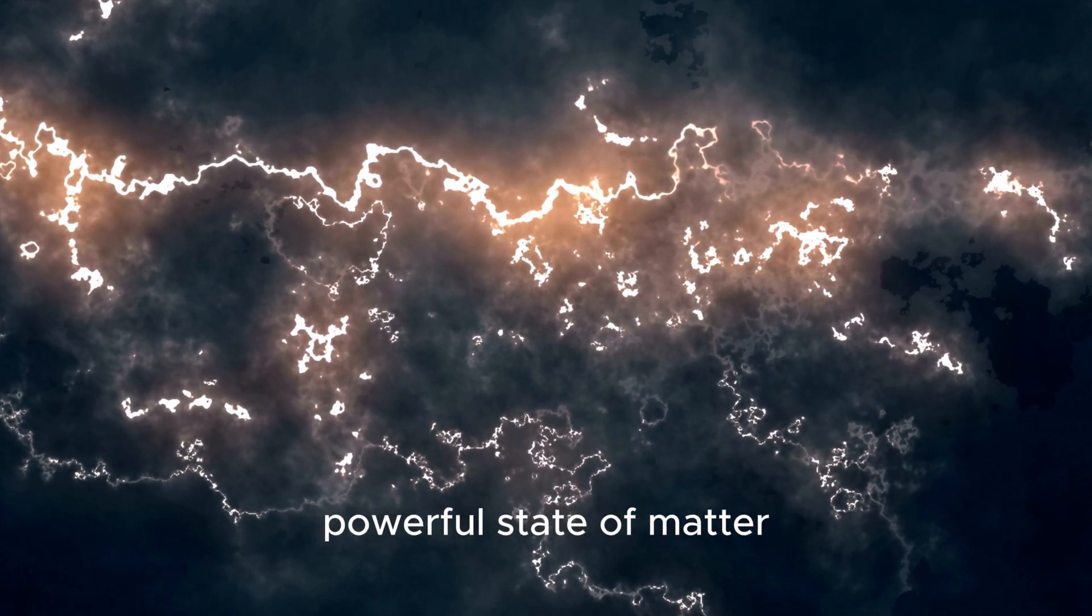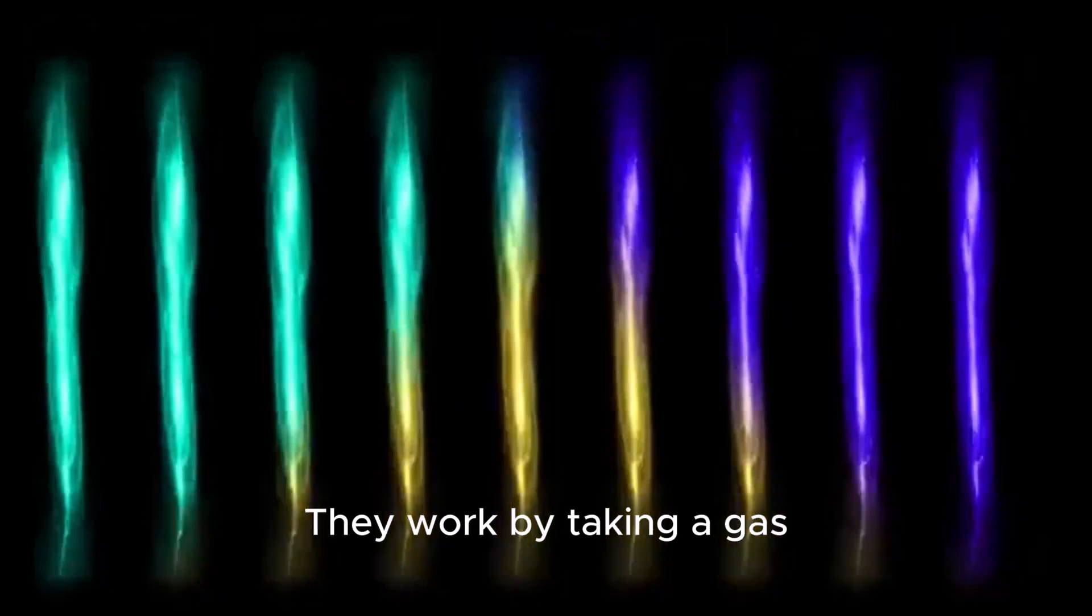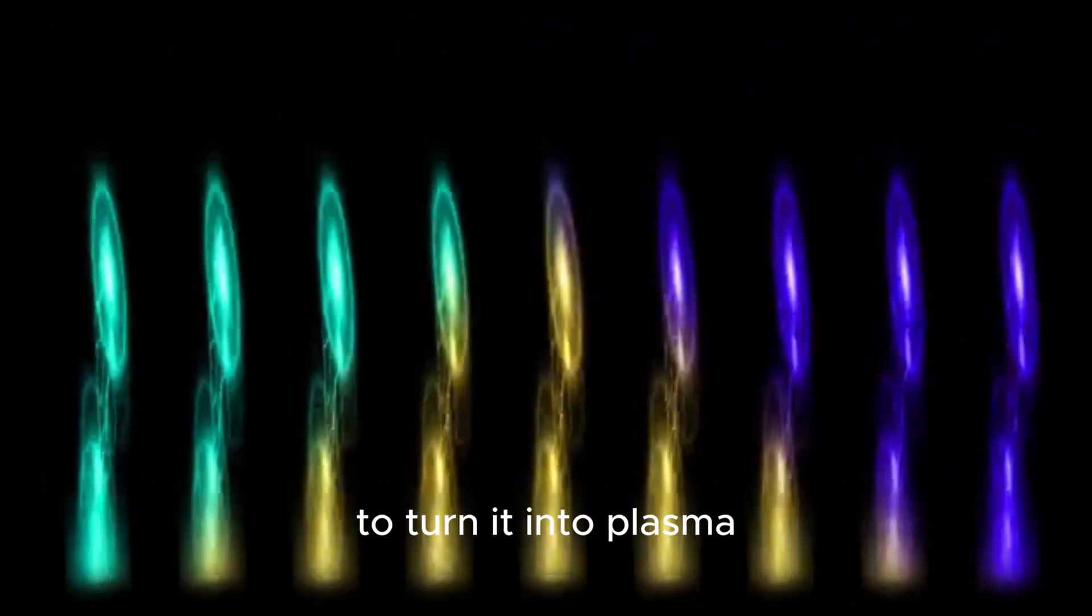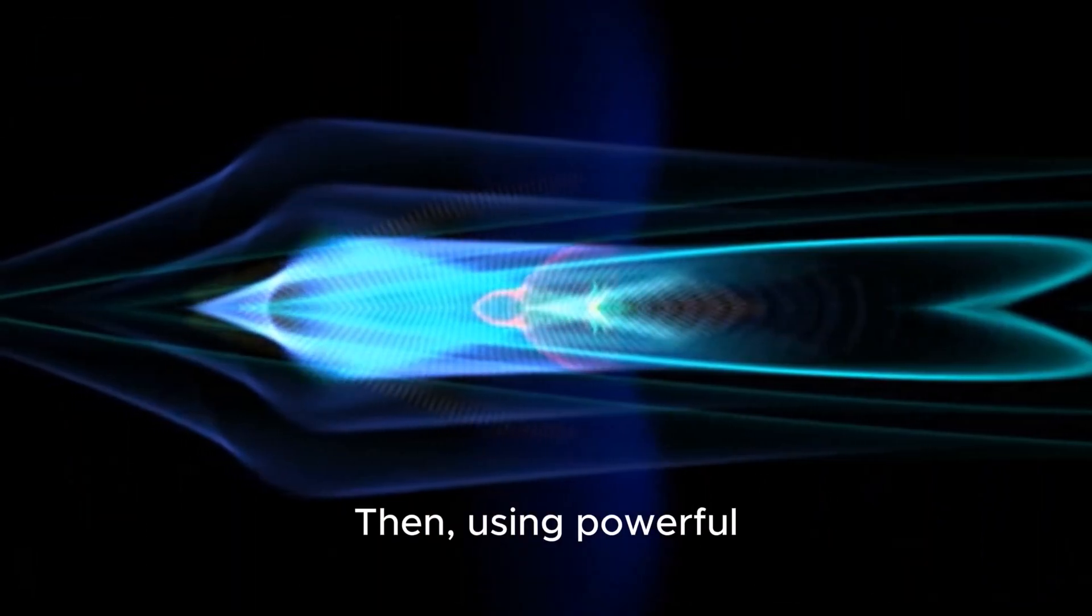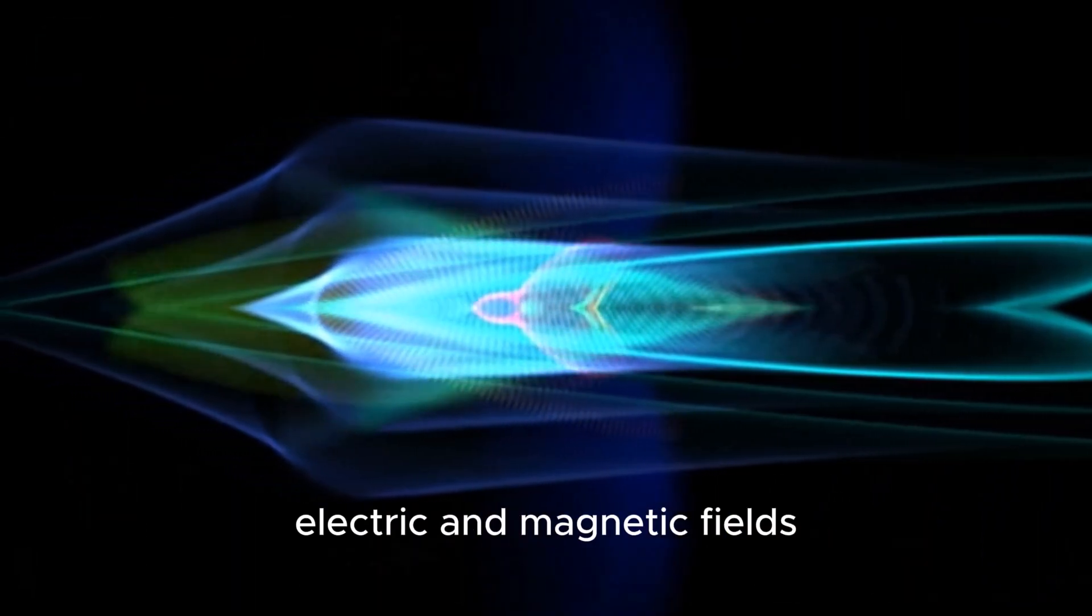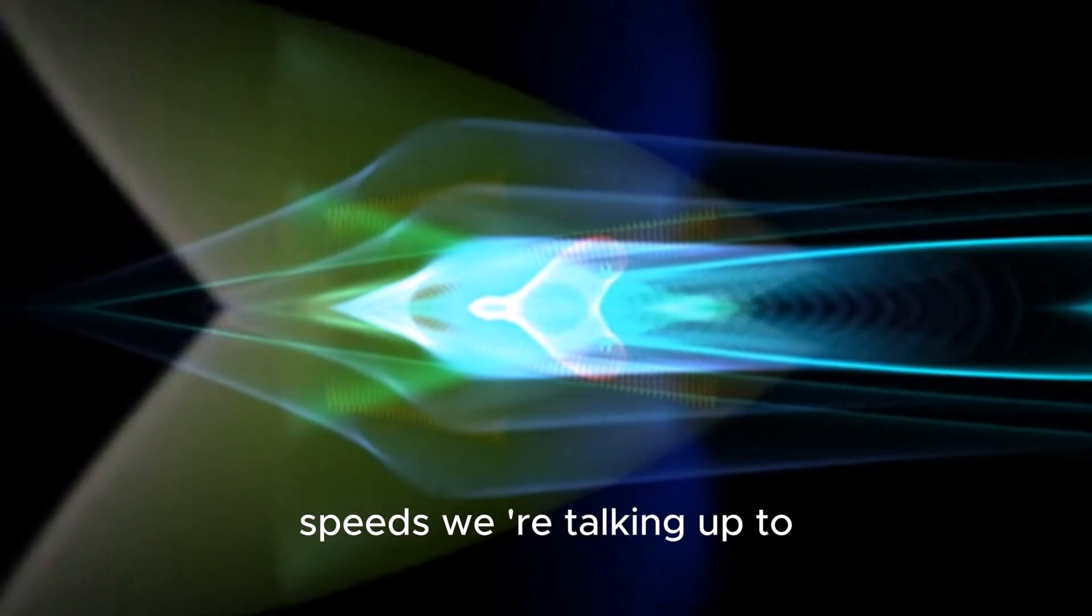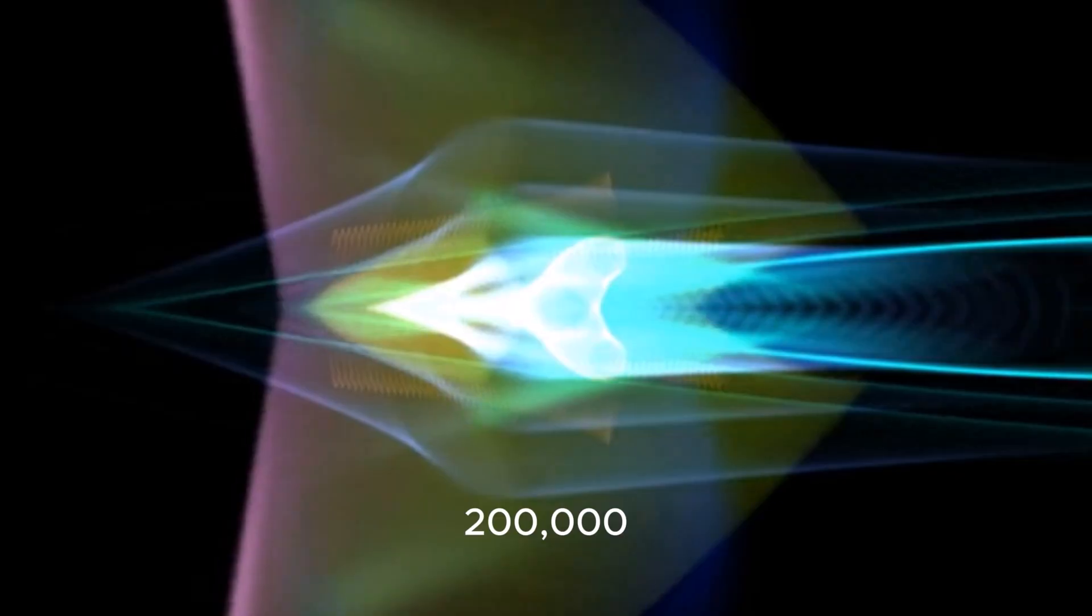Plasma engines harness this powerful state of matter. They work by taking a gas, like xenon or argon, and zapping it with energy to turn it into plasma. Then, using powerful electric and magnetic fields, they accelerate these charged particles out the back at incredible speeds. We're talking up to 200,000 miles per hour.